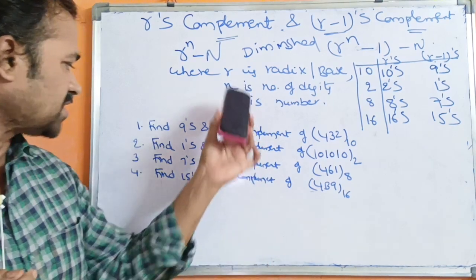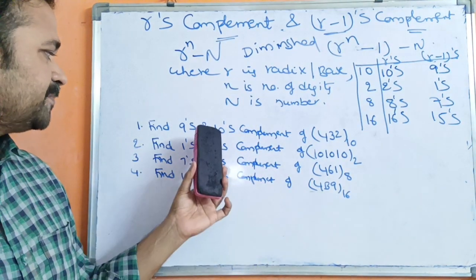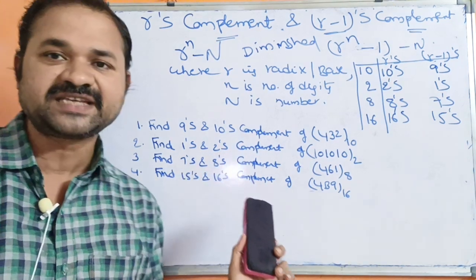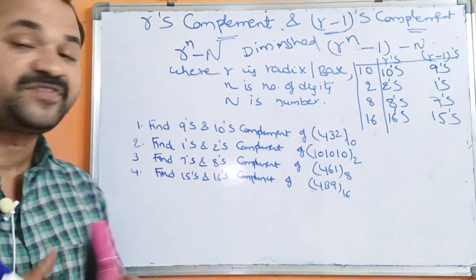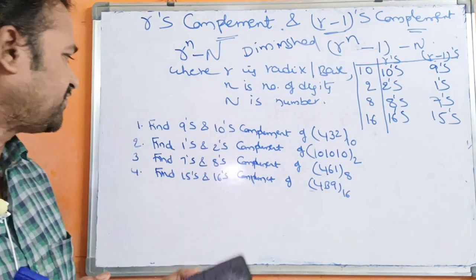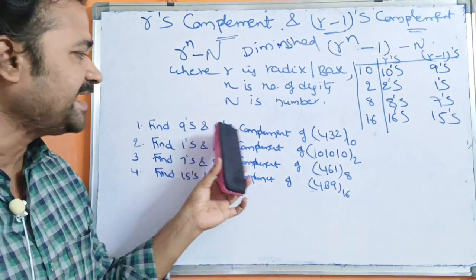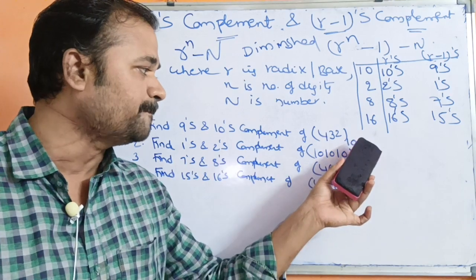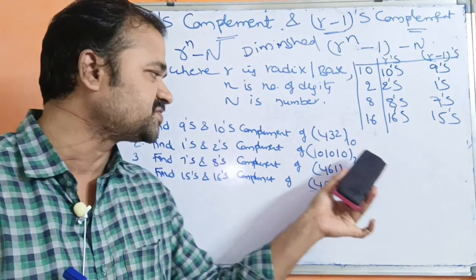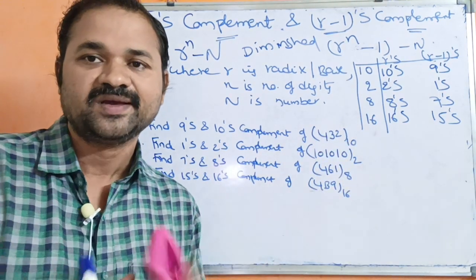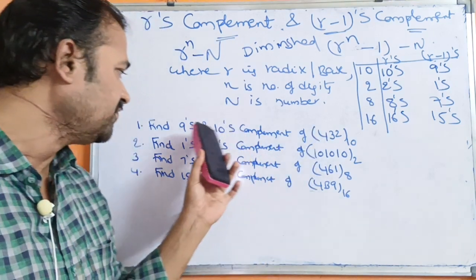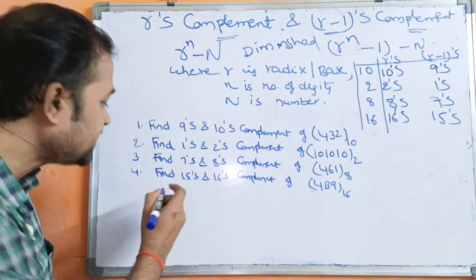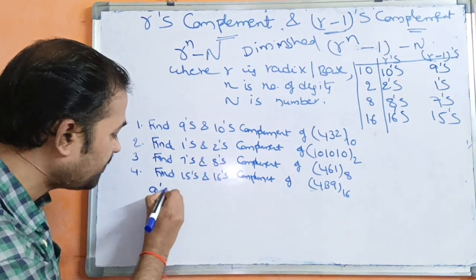Now let us solve four examples: 9's and 10's complement, 1's and 2's, 7's and 8's, and 15's and 16's. The first problem: find the 9's and 10's complement of 432 base 10. The number system is decimal, so we calculate the 9's and 10's complement.